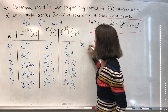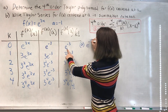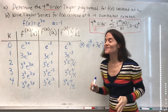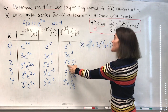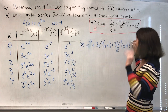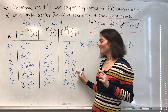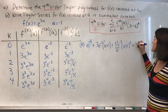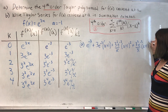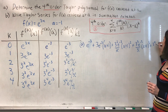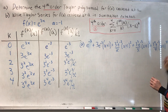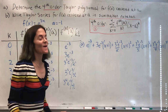For part A — the 4th order Taylor polynomial: we start with e to the minus 3, then 3e to the minus 3 times (x plus 1), then 3 squared e to the minus 3 over 2 factorial times (x plus 1) squared, then 3 cubed e to the minus 3 over 3 factorial times (x plus 1) cubed, and finally 3 to the 4th e to the minus 3 over 4 factorial times (x plus 1) to the 4th. This is our degree four Taylor polynomial.